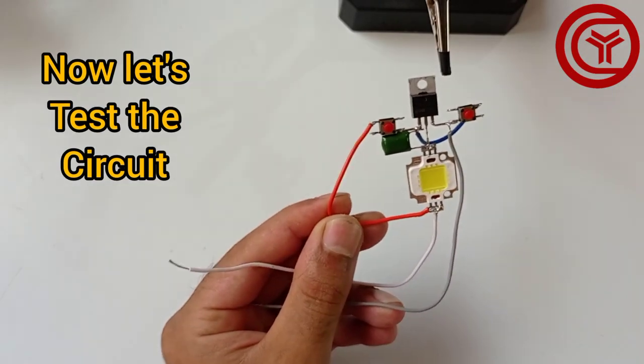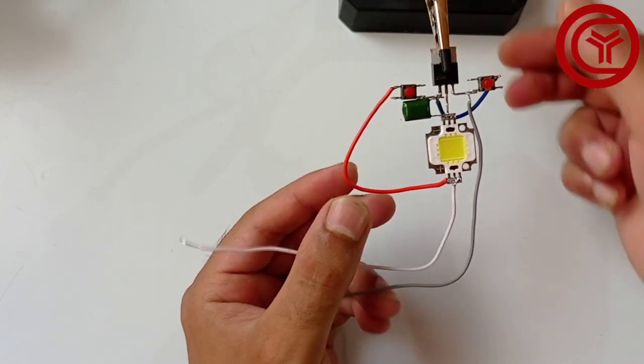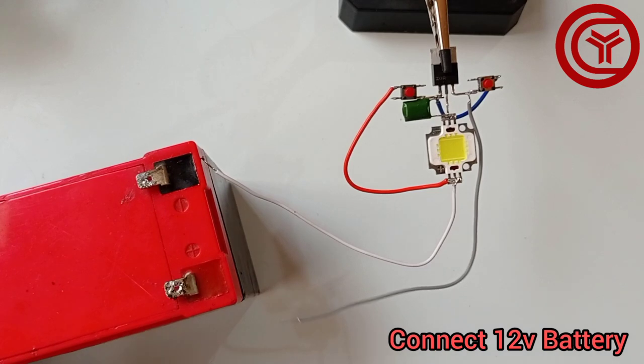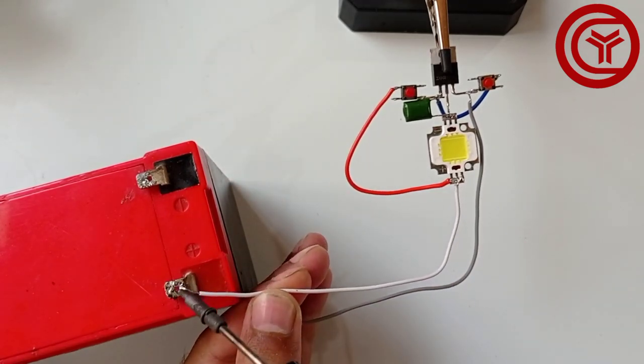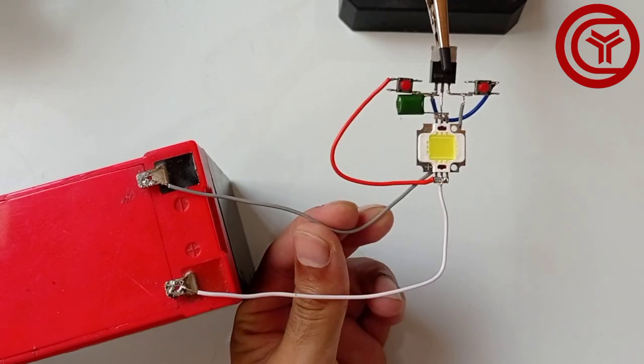Now let's test the circuit. Connect the DC supply according to the connected load. Suppose if the load connected is 35 volts, you need to connect DC supply 35 volts also.